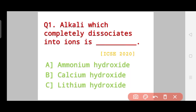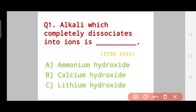The first question: which alkali completely dissociates into ions — ammonium hydroxide, calcium hydroxide, or lithium hydroxide? You can clearly see that this is an ICSE 2020 question. It is a very recent question and you must practice this question.